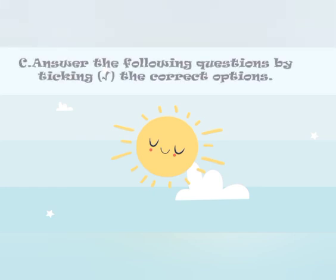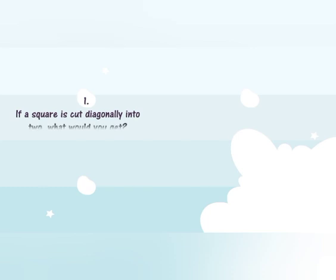Answer the following questions by ticking the correct option. You have to understand the question properly and then tick the correct answer. First: if a square is cut diagonally into two, what would you get? If we cut the square diagonally into two parts, which shape will we get — two triangles or two squares? By cutting a square diagonally, we get two triangles. So our answer is two triangles.